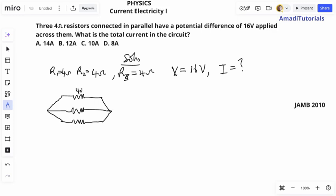All of them have the same resistance: 4 ohms, 4 ohms, 4 ohms. The potential difference across them is 16 volts.